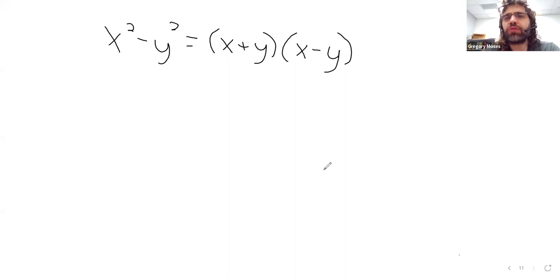So, the first thing this section wants us to observe is that if instead of x's and y's, we have trigonometric functions. Say we have the sine squared of x minus the tangent squared of x. Then we